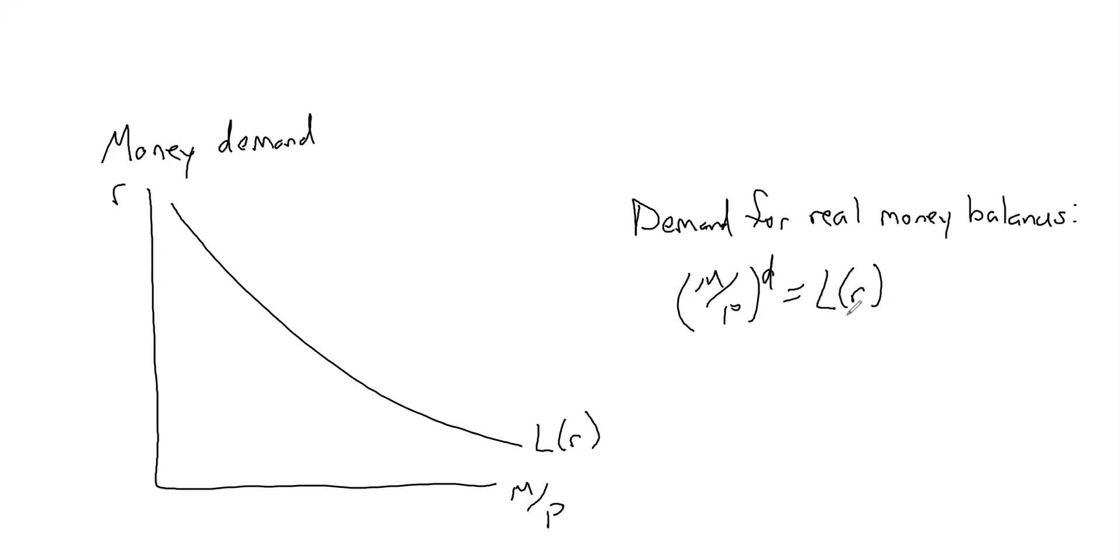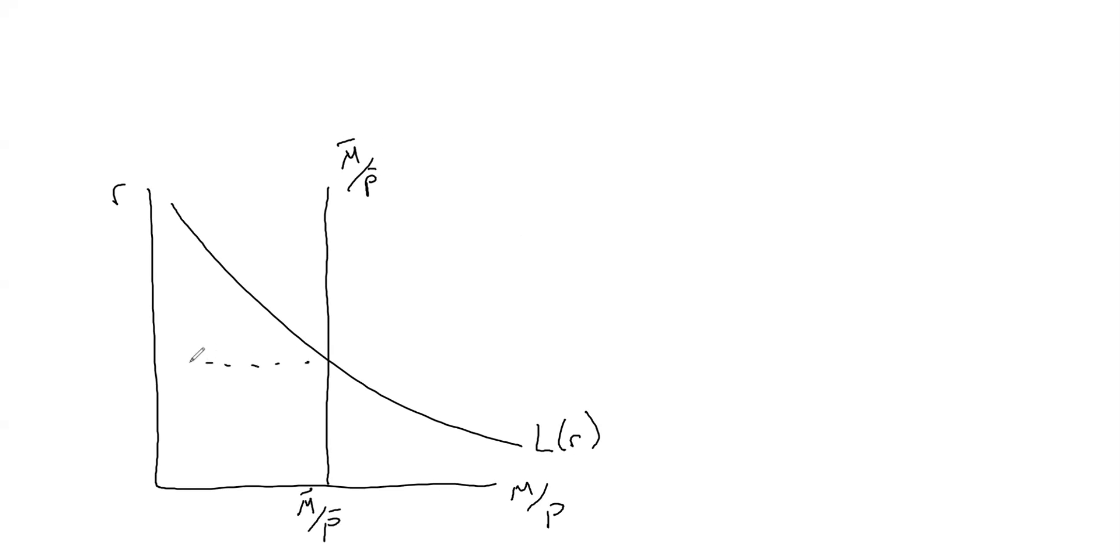So we can take this and combine it into this comprehensive theory for how interest rates are determined using the money supply. Basically, we're just going to put that money supply curve on the same graph. And so this is going to determine that fixed amount of money supply is going to determine our equilibrium real interest rate.